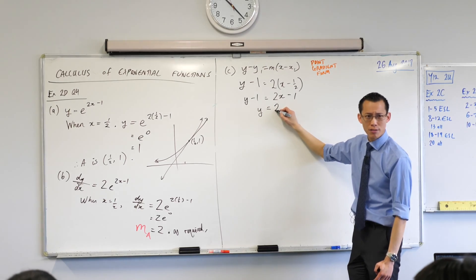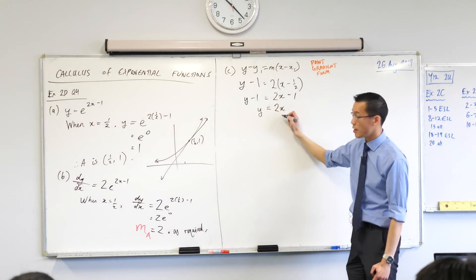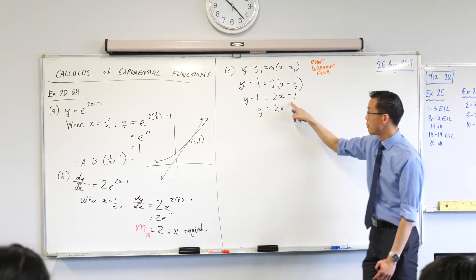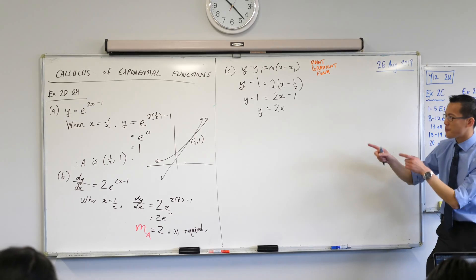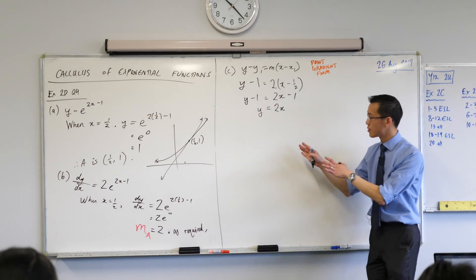Just be careful. I'm adding 1 to both sides, right? Plus 1 cancels. Plus 1 also cancels. So here's my little basket.